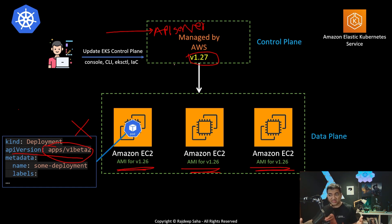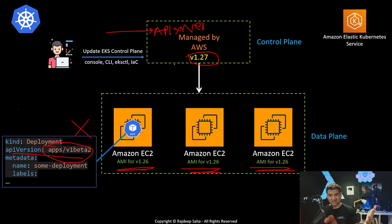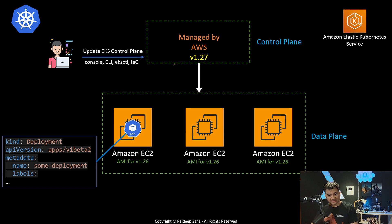I get on calls with customers a lot where they upgraded and things are breaking, and they say, 'Hey Mr. Architect from AWS, why did you break this?' The thing is, AWS has no control over this because EKS runs on open-source upstream Kubernetes — we just make sure everything is secure and release it in EKS. AWS does not deprecate any API versions; we simply follow what Kubernetes releases and take the same packages.